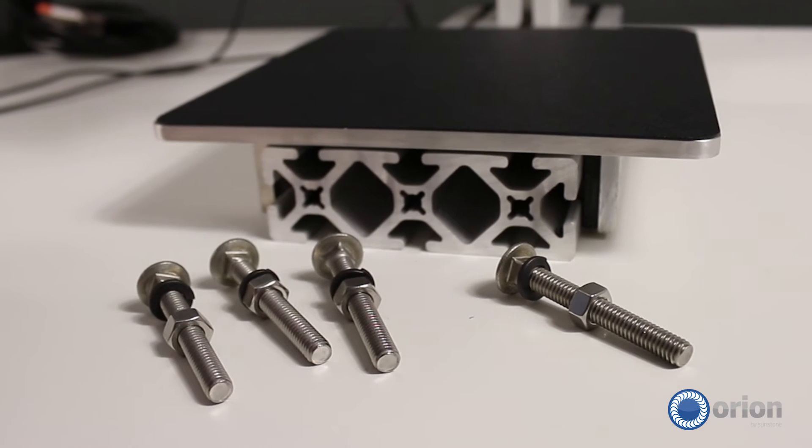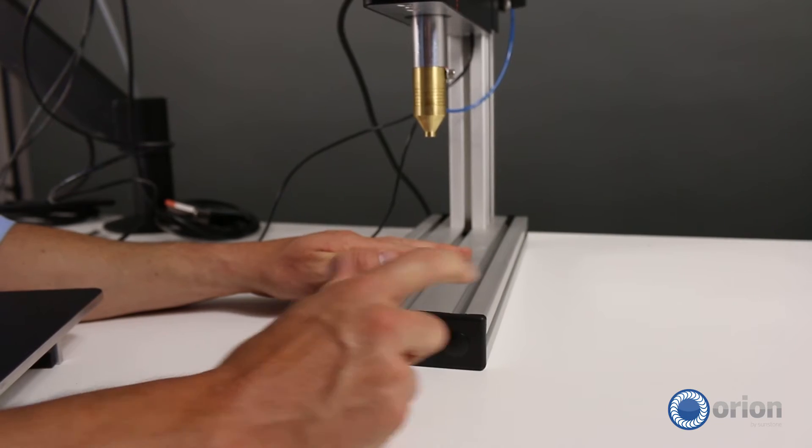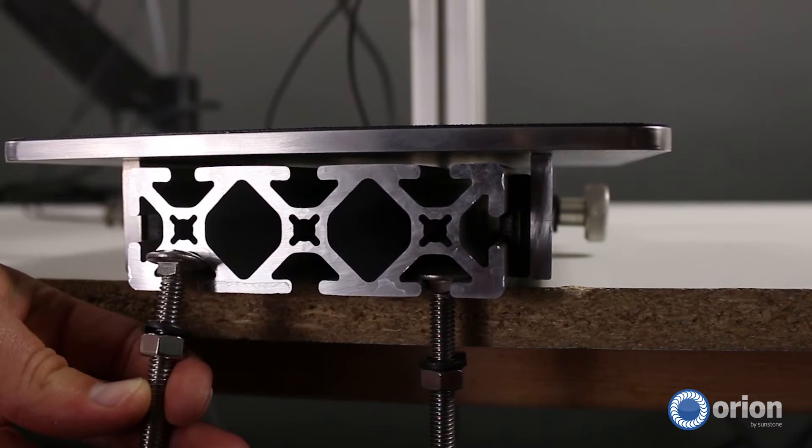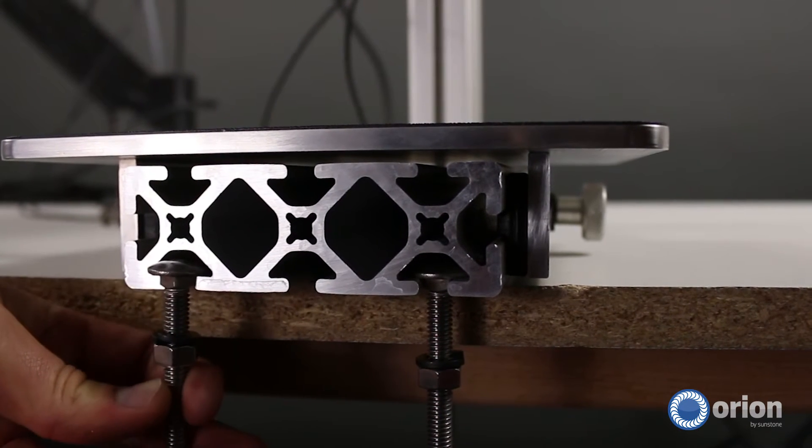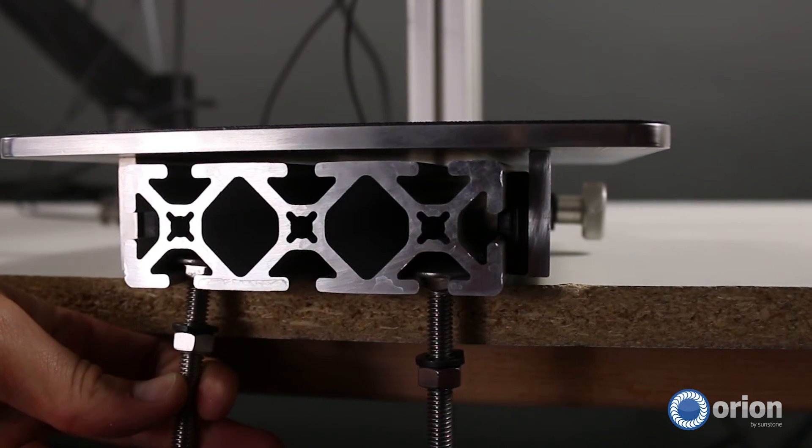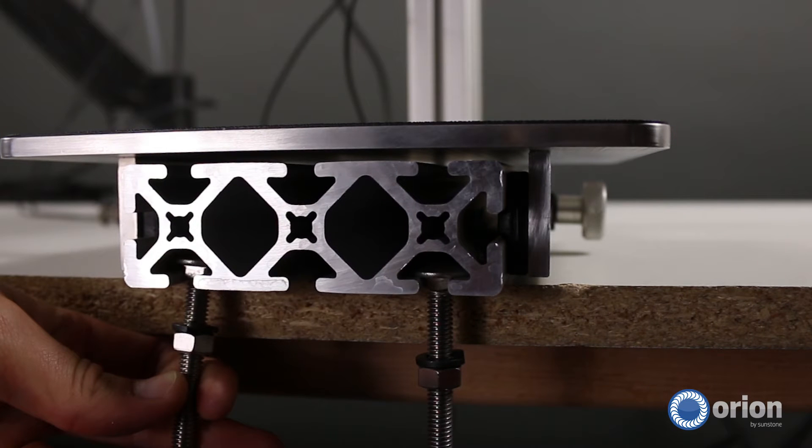Drill 4 holes into your tabletop. Slide the screws into the base, then lower the weld head into the screw holes. This will ensure your weld head will be secured in place during welding.